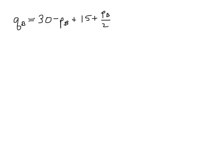I'm going to group terms up, and I get 30 minus PB over 2. That's the demand curve for Babette, is the quantity demanded for Babette. I made a mistake there.